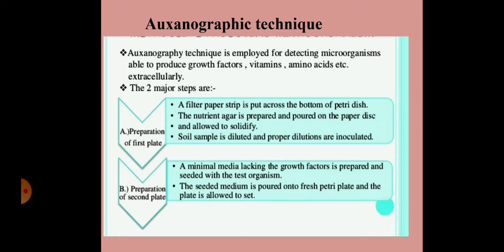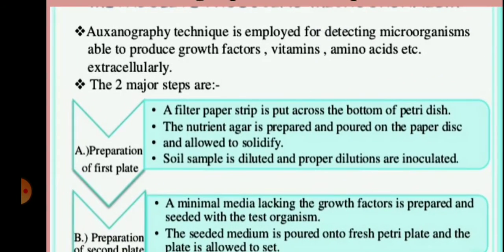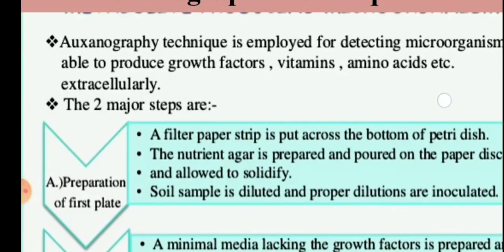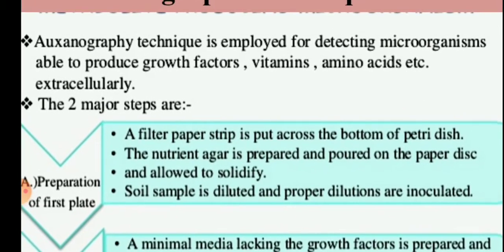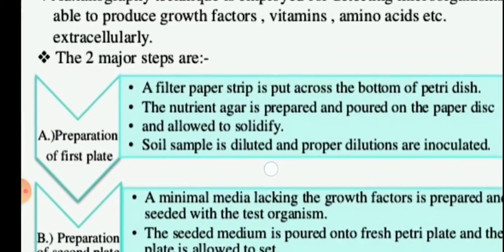The second method of primary screening is the auxanographic technique. While the crowded plate technique is used for isolating antibiotic-producing microorganisms, the auxanographic technique is employed for detecting microorganisms able to produce growth factors — such as vitamins and amino acids — extracellularly. Extracellularly means the organism produces these growth factors and secretes them out of the cell.